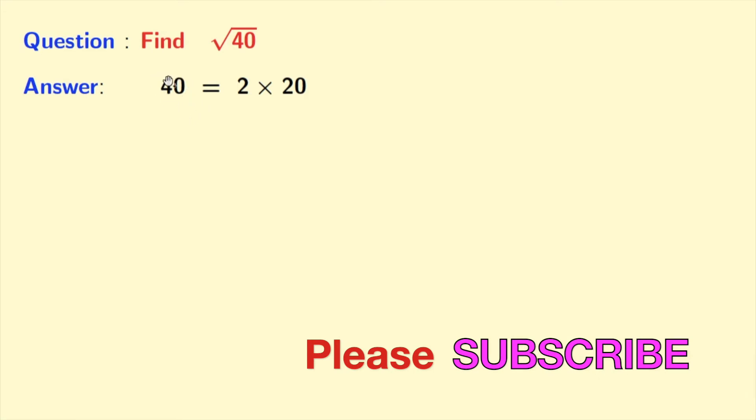is an even number, so it will be definitely divisible by 2. So we have 2 times 20. Now again we will factorize 20, and this is also an even number, so it will also be definitely divisible by 2.